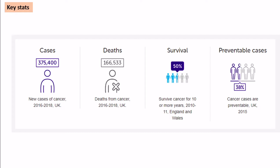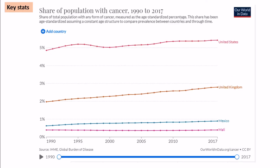Here are some basic facts that are good AO1 knowledge, especially the fact that 166,000 people die every year, with nearly 375,000 new cases every year. We can see from this graph that since the 90s cancer in the UK has risen, going up nearly 1% from 1990 to now.